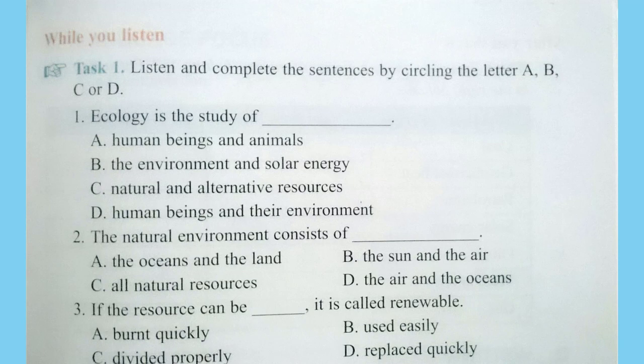The natural environment includes all natural resources that are necessary for life: the air, the oceans, the sun, and the land. Because they are vital for life, these resources must be protected from pollution and conserved.